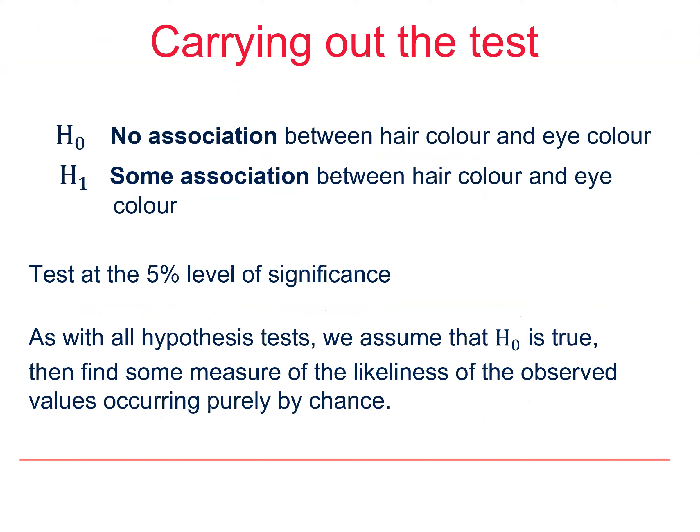You will remember that our null hypothesis is that there is no association between hair and eye colour using the contingency table that we started off with, and our alternative hypothesis is that there is some association between hair colour and eye colour. As usual, we have chosen our significance level before carrying out the test.